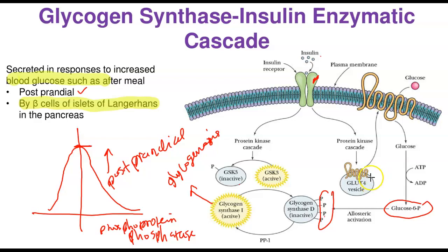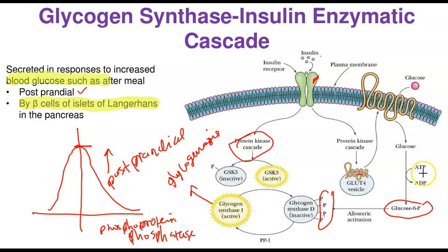Another thing that insulin does is promote glucose uptake by cells via a transporter called the GLUT4 transporter. The same protein kinase cascade activates GLUT4, which moves glucose into the cell. Once inside, glycolysis can begin — the first reaction being catalyzed by hexokinase, which converts glucose to glucose-6-phosphate. Glucose-6-phosphate can also be an allosteric activator of glycogen synthase, and can continue down to fructose-6-phosphate and through glycolysis.